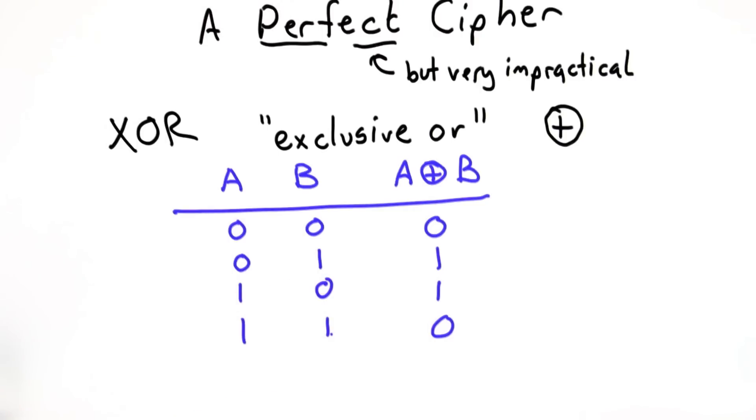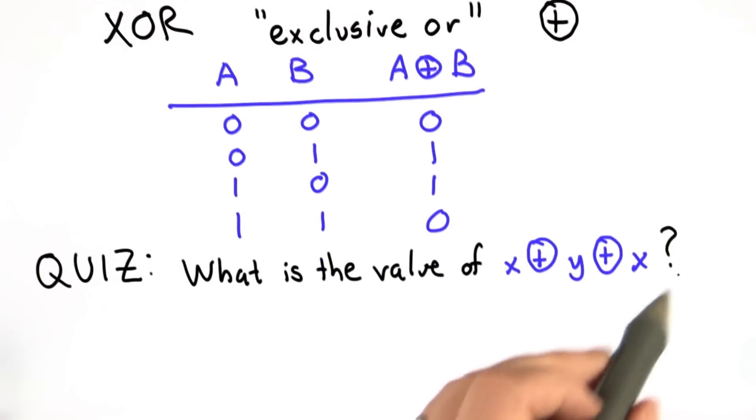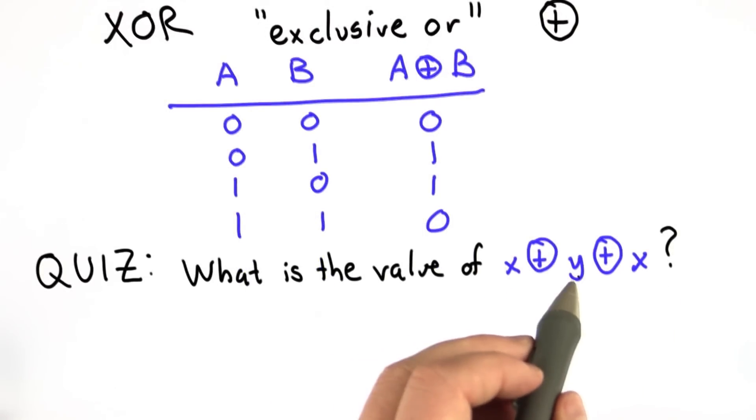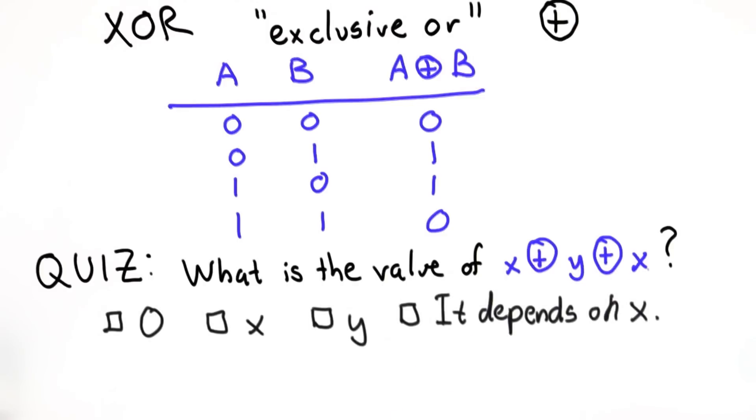XOR has lots of useful properties that make it the favorite function of every cryptographer. And I'll see if you can figure out one of these on your own. So the question is, for any values x and y, what is the value of x XOR y XOR x? Here are your choices: